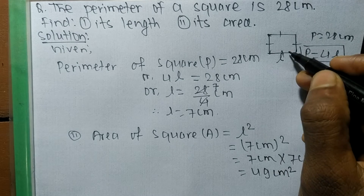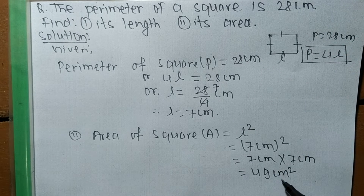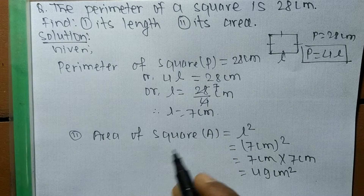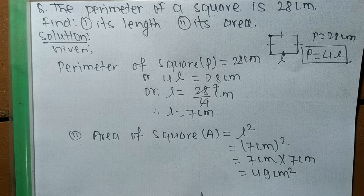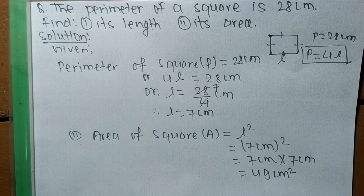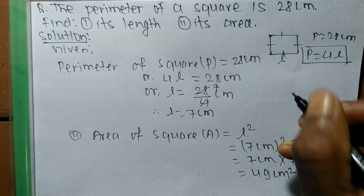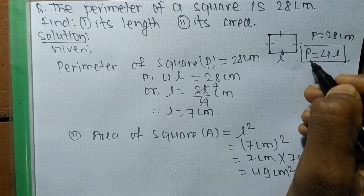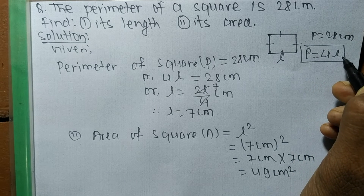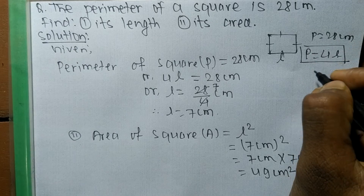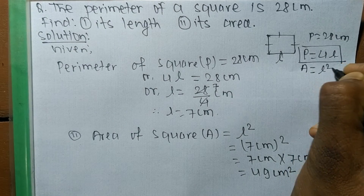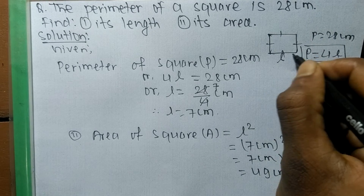So the area of this square is 49 centimeters squared and its length is 7 centimeters. In this way we can solve a problem related to a square. Just remember: in a square all sides are equal, the perimeter of a square equals 4L, and the area of a square equals L squared, where L is the length of each side.